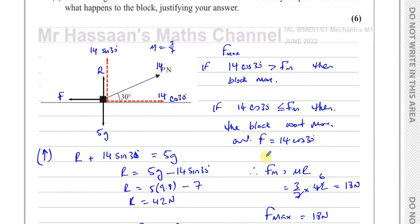Just because F max equals 18 doesn't mean friction is always 18. The maximum friction can reach is 18, but as the applied force increases, friction increases to match it. If the horizontal component of the force were zero, there would be no friction. As the horizontal force increases toward 18, friction matches it. Once it reaches 18, that's the maximum — if the horizontal force exceeds 18, the object moves. In this case, with the horizontal component at approximately 12.1 newtons, which is less than 18, the object won't move, and F equals 14 cosine 30.